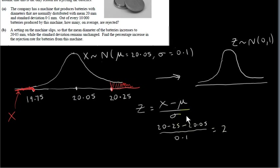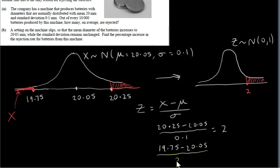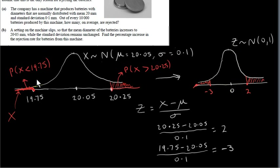When X is 20.25, we subtract mu of 20.05 and divide by sigma of 0.1, giving Z equals 2. For X equals 19.75, we have 19.75 minus 20.05 divided by 0.1, giving Z equals minus 3. We no longer have the symmetry from before. So P(X > 20.25) is equivalent to P(Z > 2), and P(X < 19.75) is equivalent to P(Z < -3).